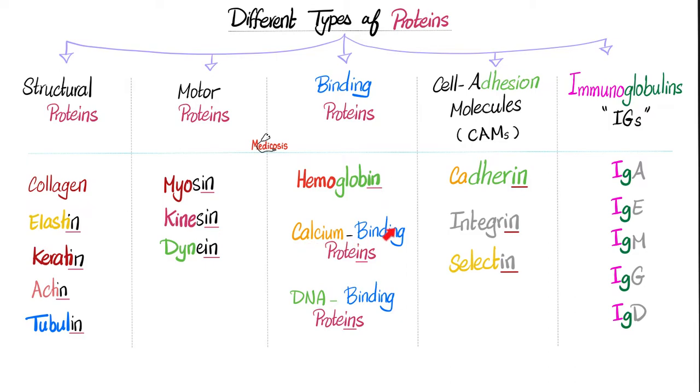Binding proteins include hemoglobin, calcium-binding protein such as calbindin, DNA-binding proteins such as transcription factors, cell adhesion molecules: cadherin, which is a calcium adhering protein; integrin, which is an integral protein. What do you mean by integral? An integral protein is a protein that takes the entire thickness of the cell membrane. And selectin for a selective activity. And don't forget the famous gamma globulin, which are immunoglobulins. Recall that your plasma proteins are either albumin or globulin. The globulins are either alpha globulin, beta globulin, and gamma globulin. The gamma globulins in your body are the immunoglobulins, including immunoglobulin A, E, M, G, D, etc. Like in the boy's name, Majid.